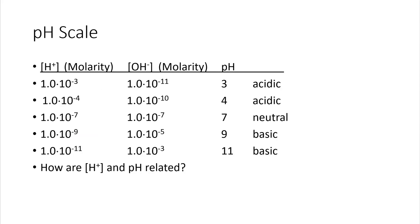pH scale. This table contains four columns: hydrogen ion concentration, hydroxide ion concentration, the pH, and whether the solution is acidic, neutral, or basic. In row one, the hydrogen ion concentration is 1.0 × 10⁻³, the hydroxide ion concentration is 1.0 × 10⁻¹¹, the pH is 3, and the solution is acidic.